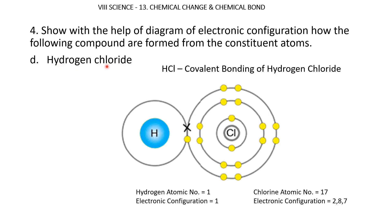Hydrogen chloride forms a covalent bond. Hydrogen (atomic number 1) has configuration 1. Chlorine (atomic number 17) has configuration 2, 8, 7. Hydrogen and chlorine share 1 electron with each other — hydrogen gets 2 electrons and chlorine gets 8 in the outermost shell. This sharing of 1 electron is why HCl forms a covalent bond.